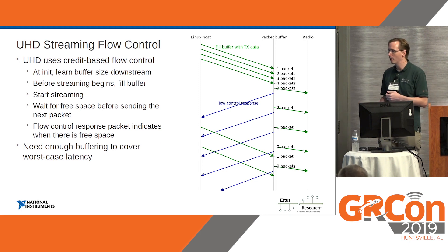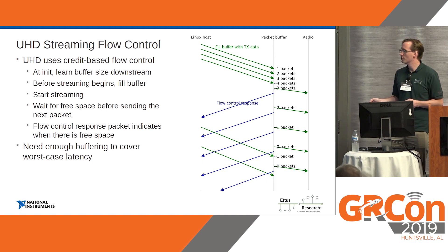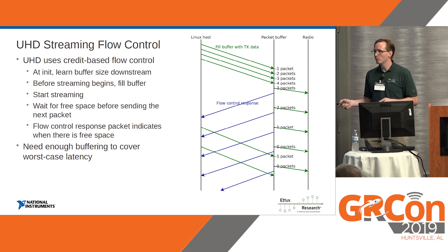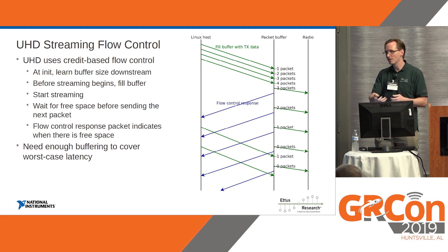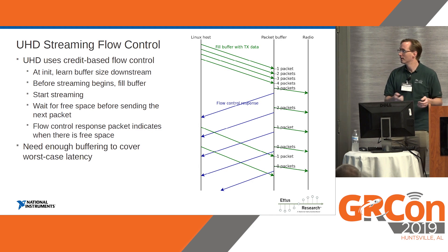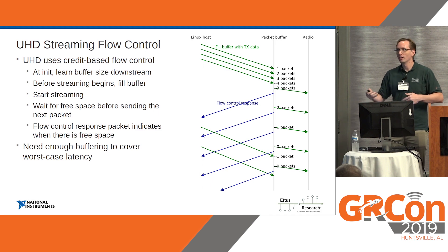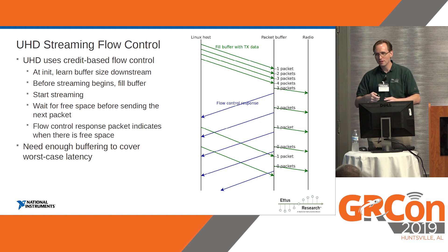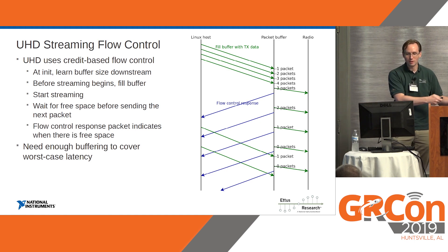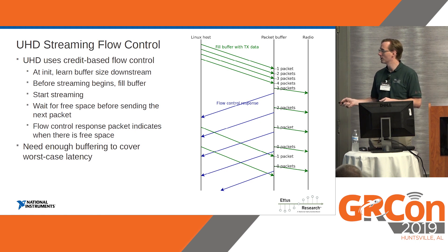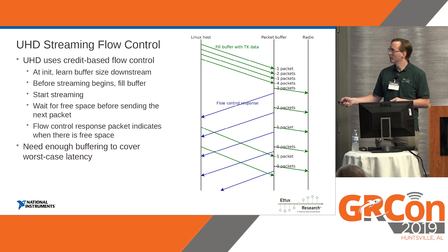In terms of time and how things work, UHD uses credit-based flow control. As we try to send packets down, we have to get a message back that says there's space and we can send more to the packet buffer. At init, you learn your buffer size downstream, send your command to start streaming sometime in the future, fill the buffer, and then the radio can start streaming at a constant rate. The radio and packet buffer will send its flow control response — UHD will say it can send more — and hopefully it'll arrive in time so we don't get an underrun.